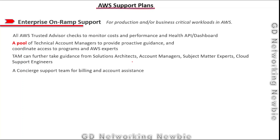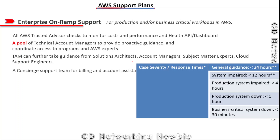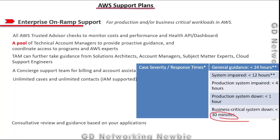Enterprise On-Ramp also includes a concierge support team for billing and account assistance. Response times: general guidance is less than 24 hours, system impaired is less than 12 hours, production system impaired is less than 4 hours, production system down is less than 1 hour, and if a business-critical system is down you get a response in less than 30 minutes. Unlimited cases and unlimited contacts are also included, along with consultative review and guidance based on your application.